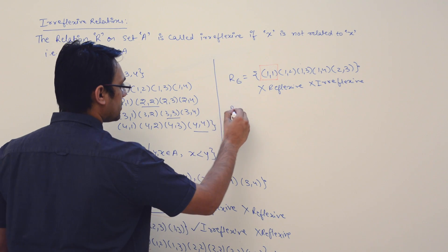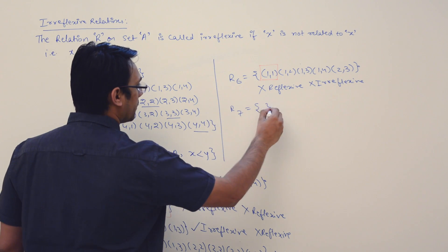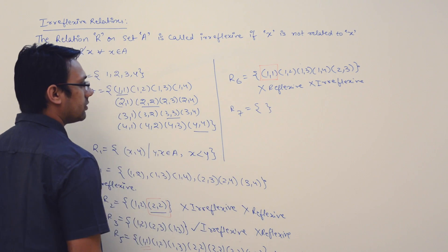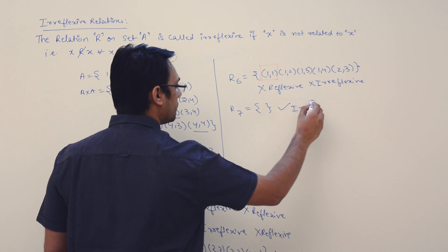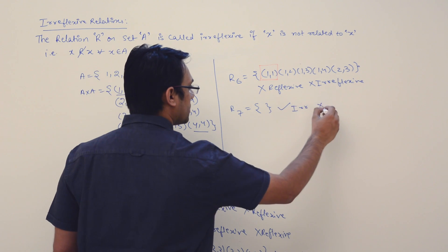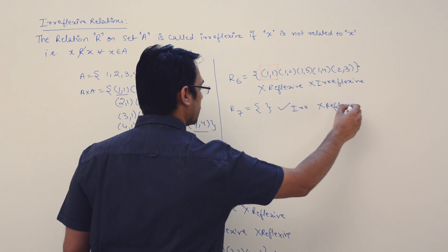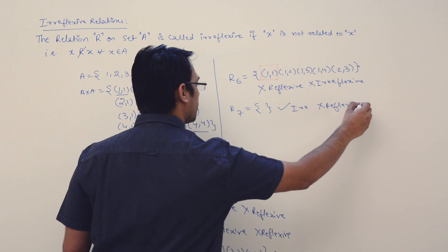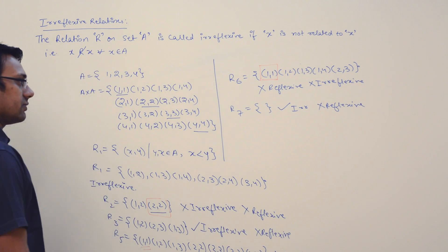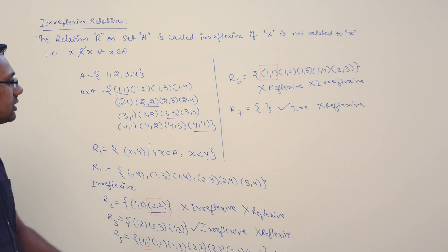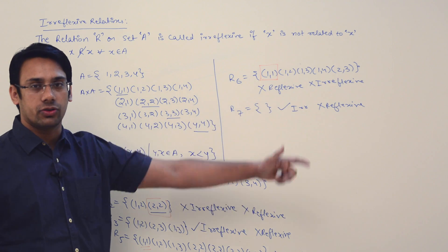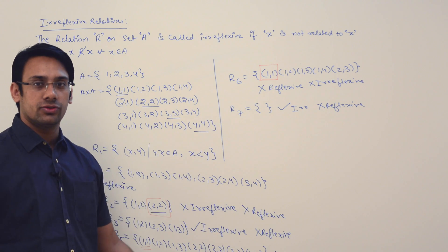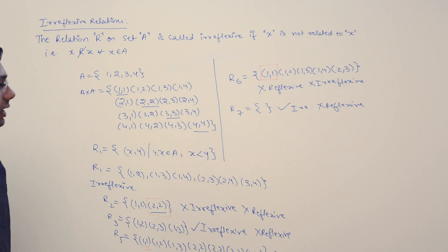We can also have relation R7 which is an empty set. This relation is irreflexive but not reflexive. It is irreflexive because it does not contain any pairs of the form (1,1), (2,2), etc.